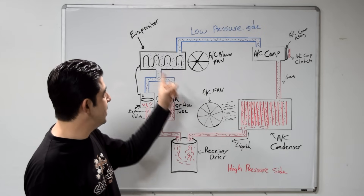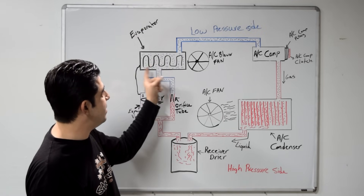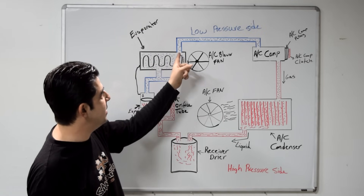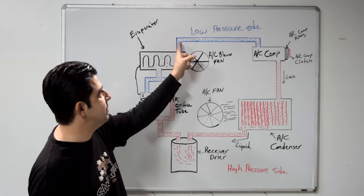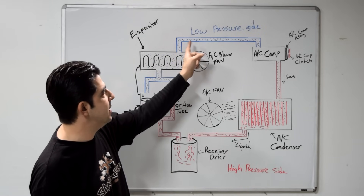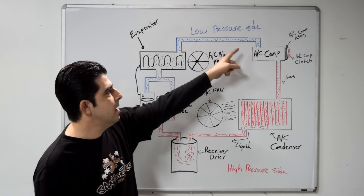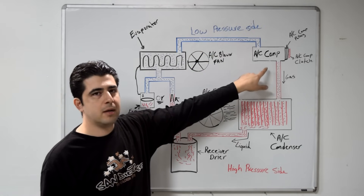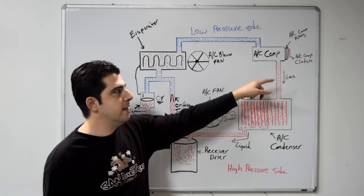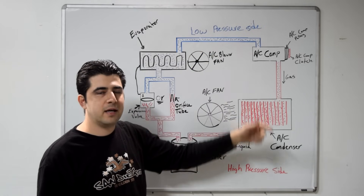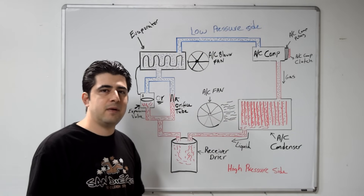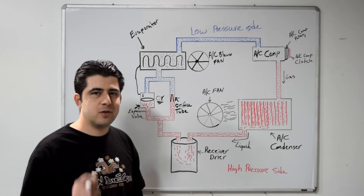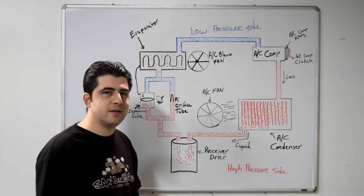After the refrigerant leaves your evaporator, it travels through your return line back to your AC compressor, and the whole process just keeps repeating as long as you have your AC turned on.